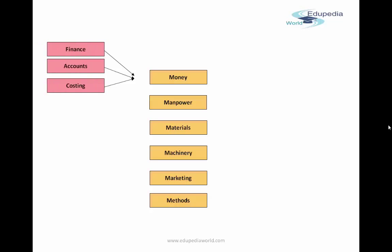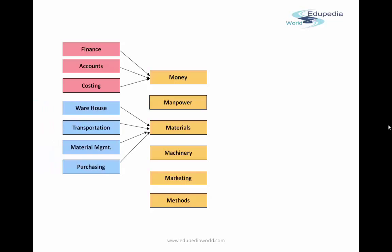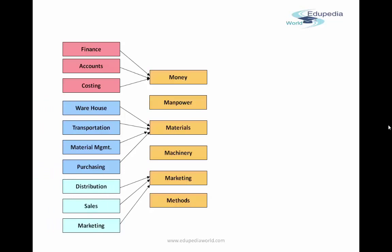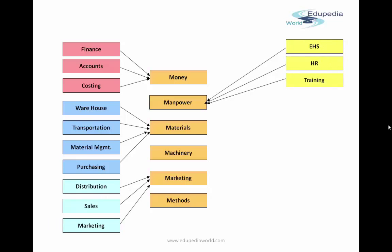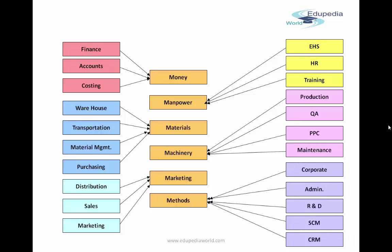Money is managed by finance, accounting, and costing departments. Materials are handled by warehouse, transportation, material management, and purchasing. People and marketing are handled by distribution, sales, and marketing. Manpower is managed by EHS — enterprise environment health and safety — HR, and training. Machinery is handled by production, quality analysis, production planning, and maintenance. Methods are handled by corporate administration, R&D, supply chain management, and CRM.